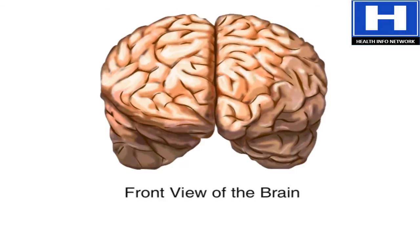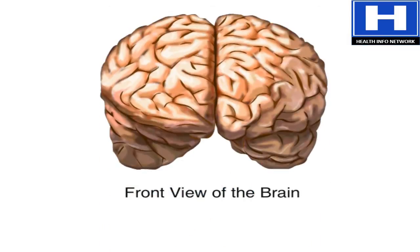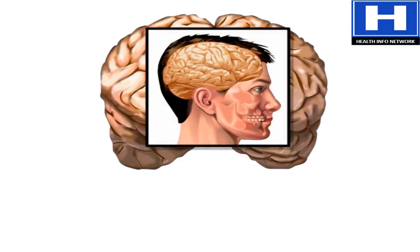The cerebrum is divided into left and right sides, which communicate with each other through a thin stalk of nerve fibers. The grooves and folds increase the cerebrum's surface area, allowing us to have a tremendous amount of gray matter inside of the skull.